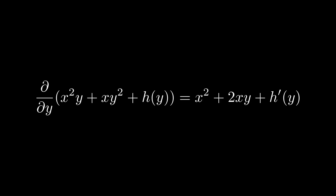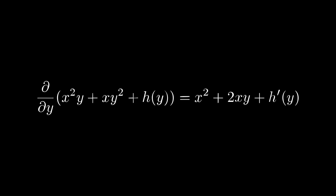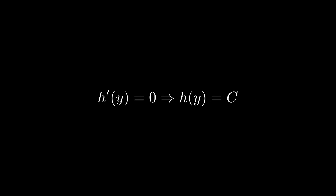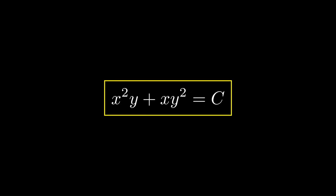We take the partial derivative of our result with respect to y, getting x² + 2xy + h'(y). Since the derivative of our constant h(y) must match N, and in this case h'(y) equals zero, we conclude h(y) = c.